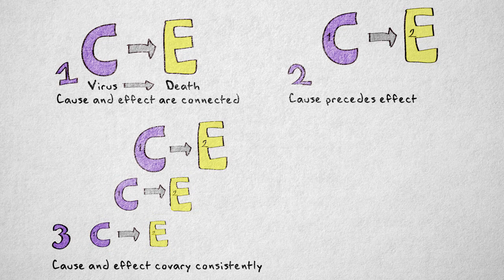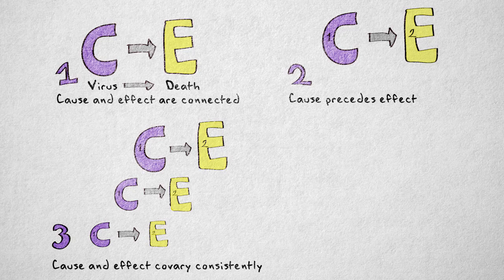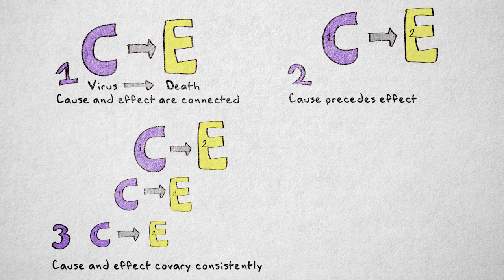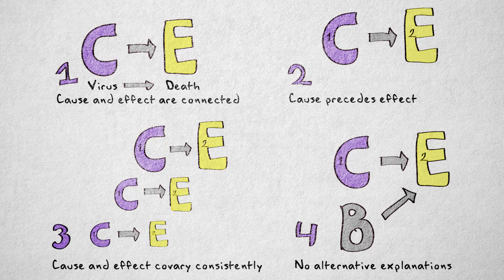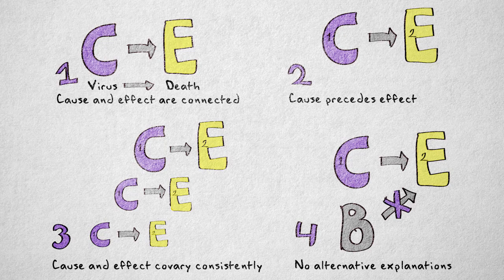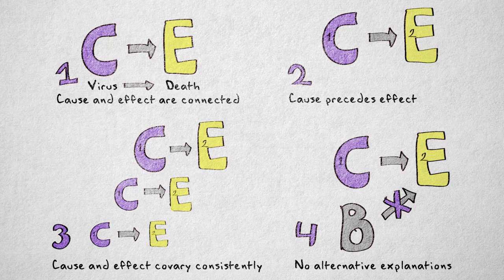If the cause influences the effect to a certain degree, then we should see a consistently stronger or weaker effect accordingly. Criteria number four, alternative explanations can be ruled out. Okay, so let me illustrate these criteria with an example.